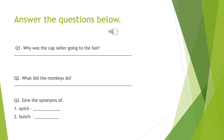Now here are some questions which you will have to answer on reading the passage. The first question: Why was the cap seller going to the fair? The second question: What did the monkeys do? The third question: Give the synonyms of 'quick' and 'bunch'.